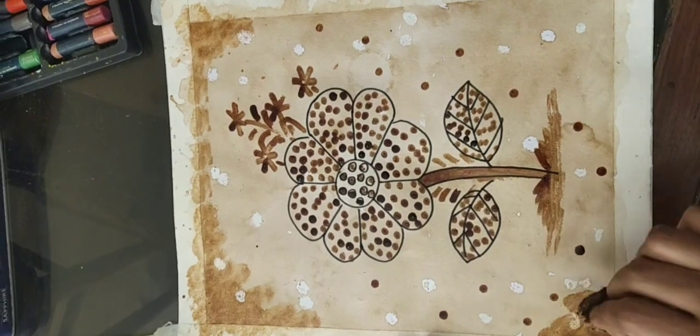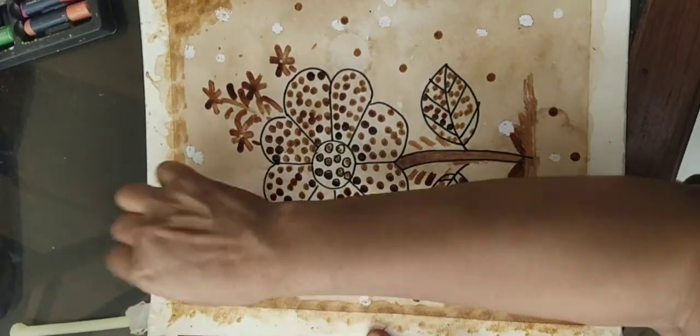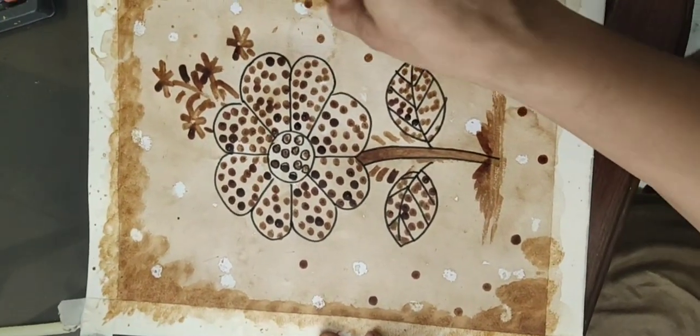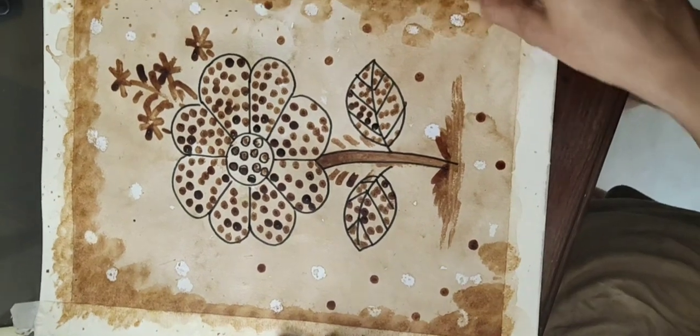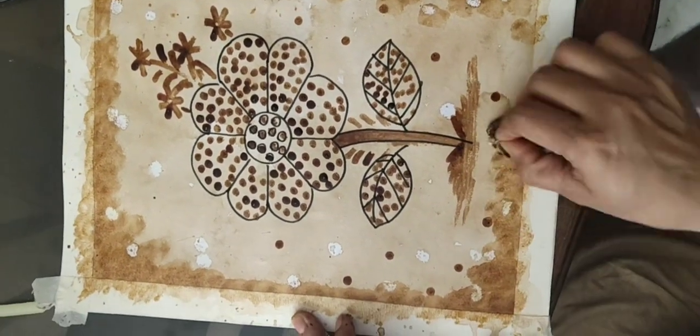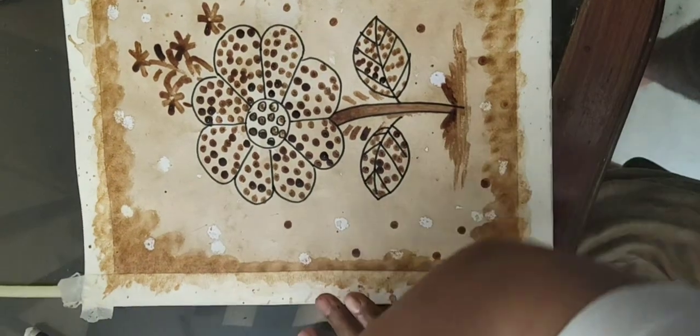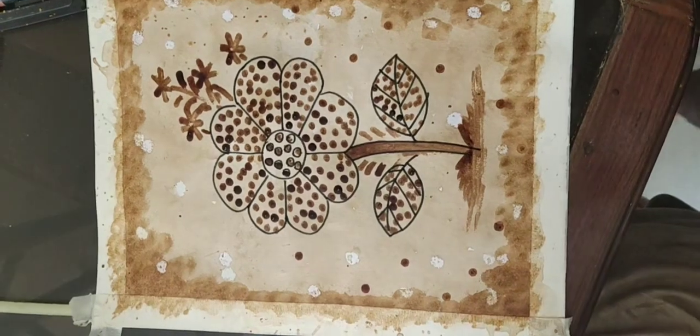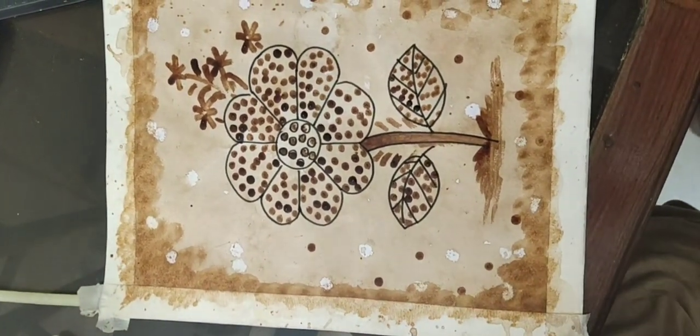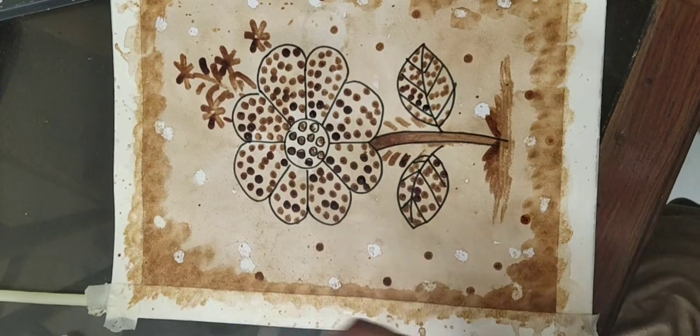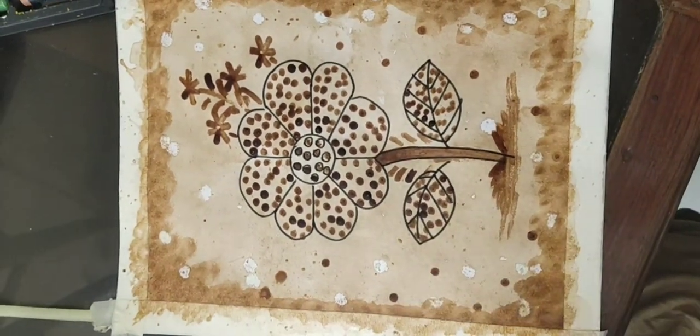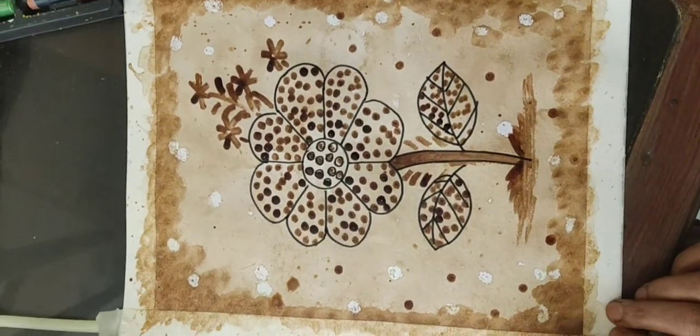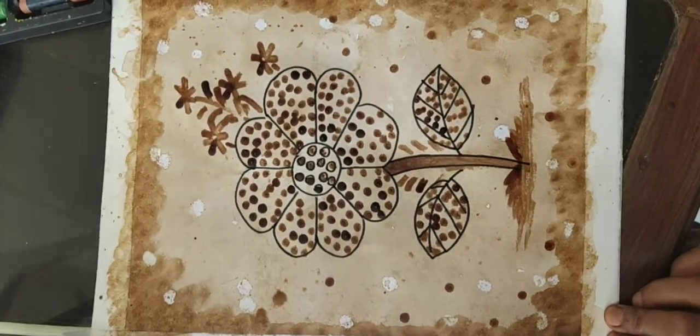It will give a little bit dark effect on the edges. After this, I'll remove the tape. You should remove it very carefully. You can give a little bit spray with the toothbrush also if you want, otherwise it will look nice without that also. Now just remove it very carefully.